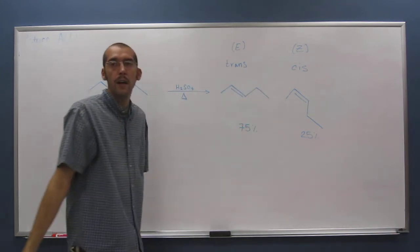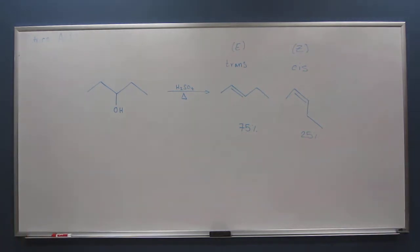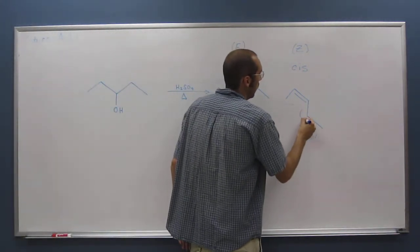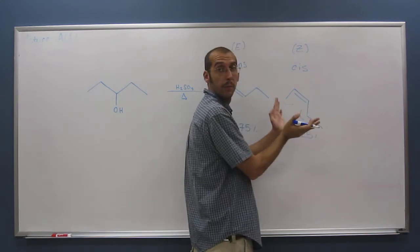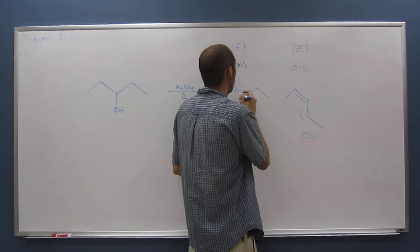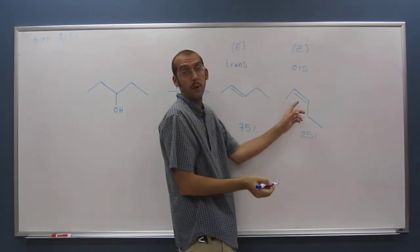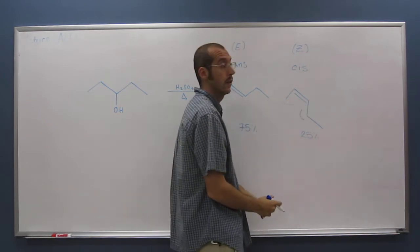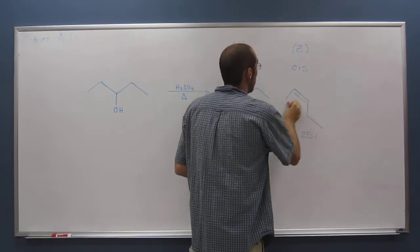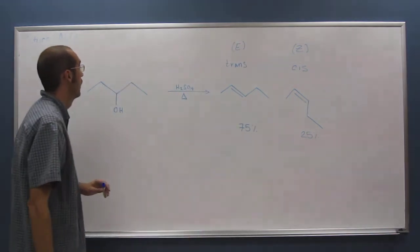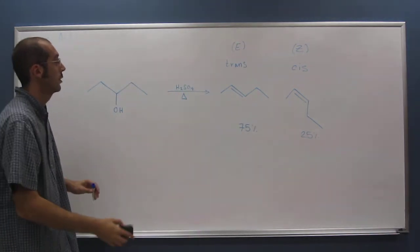The trans form doesn't have that steric clash of the two groups bumping into each other. The cis form is less favorable than the trans because you've got the steric hindrance of each other coming together. So let's go over the mechanism of this and just look at it.